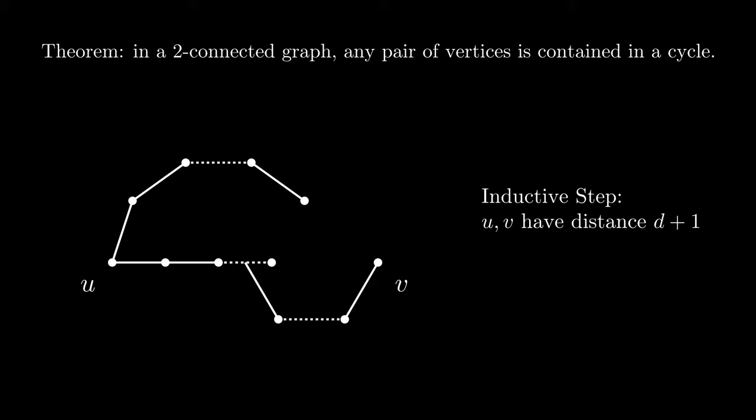Lastly, if we re-add w with all of its edges, we can complete a cycle containing u and v.